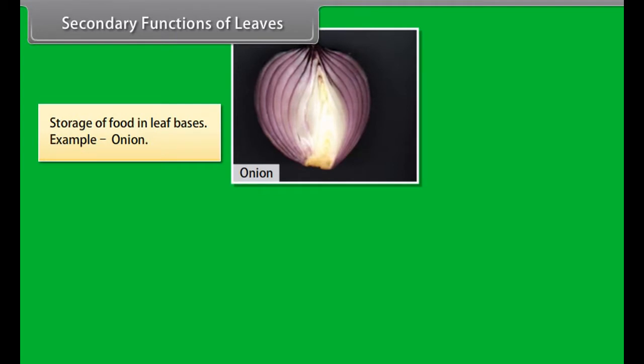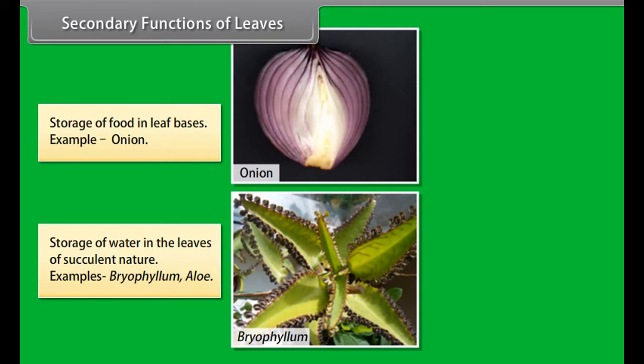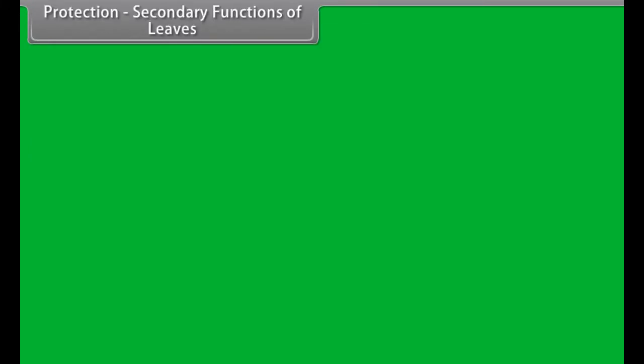Functions of leaves: Leaves have the following types of functions—primary or main functions, and secondary or accessory functions.